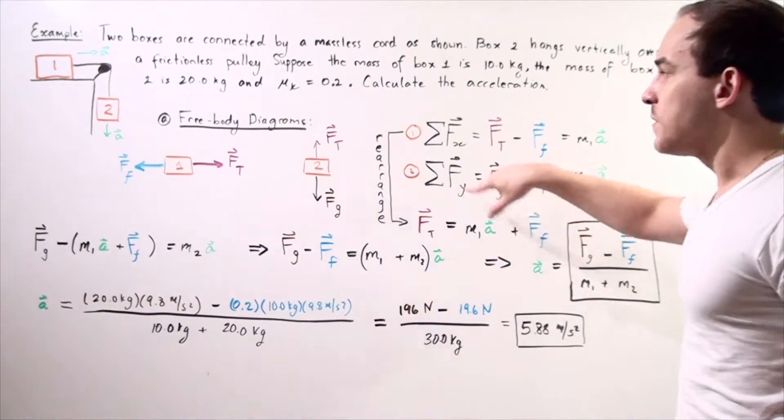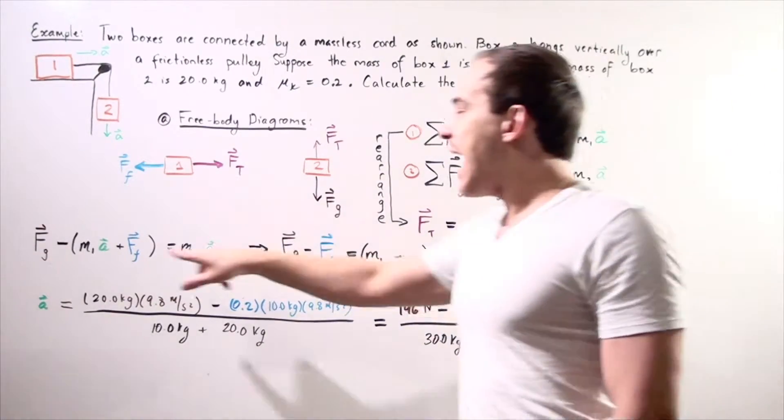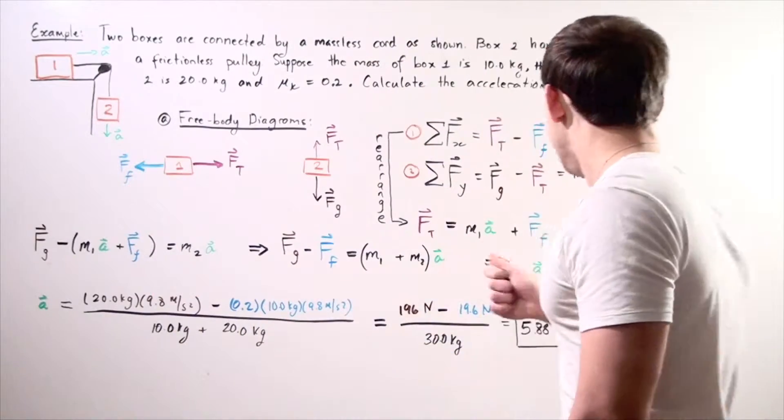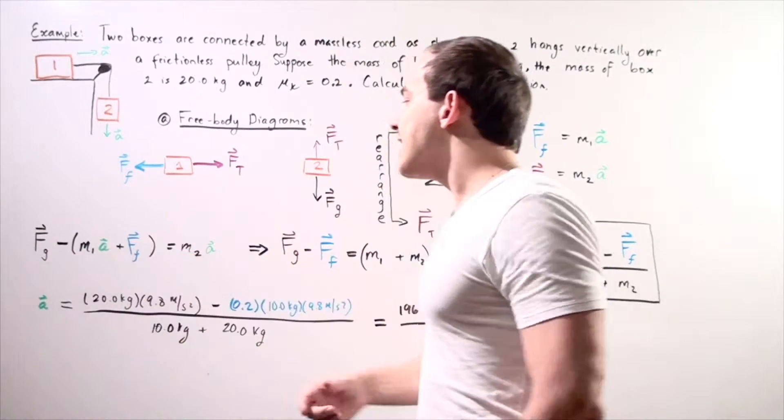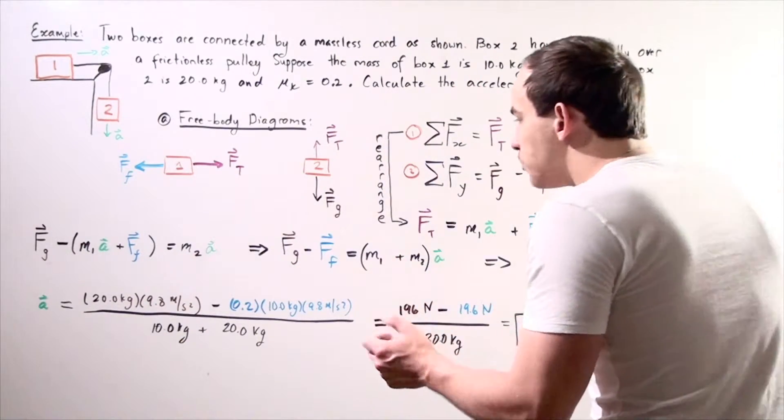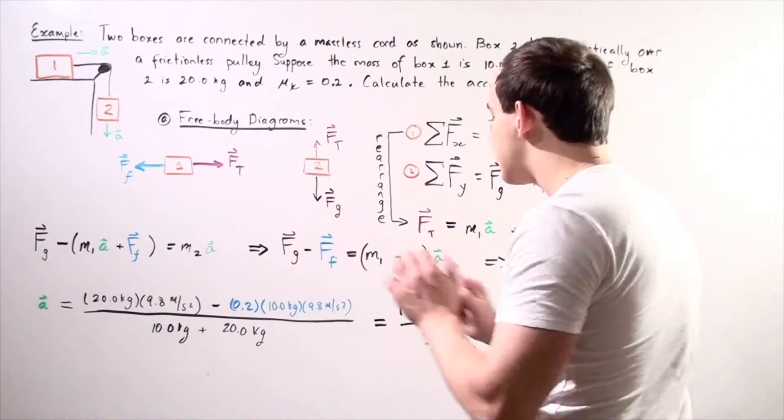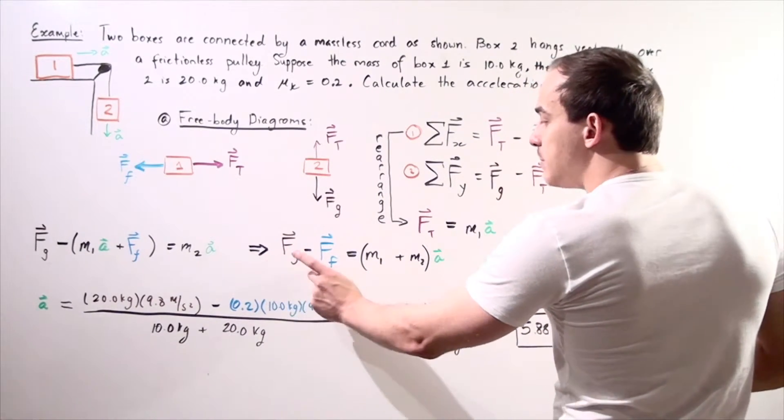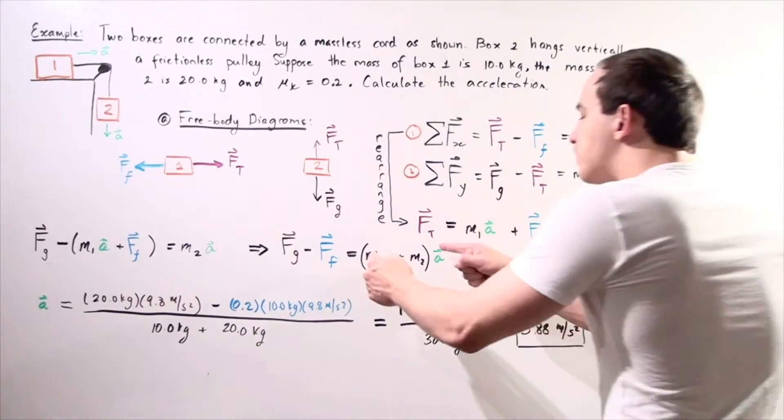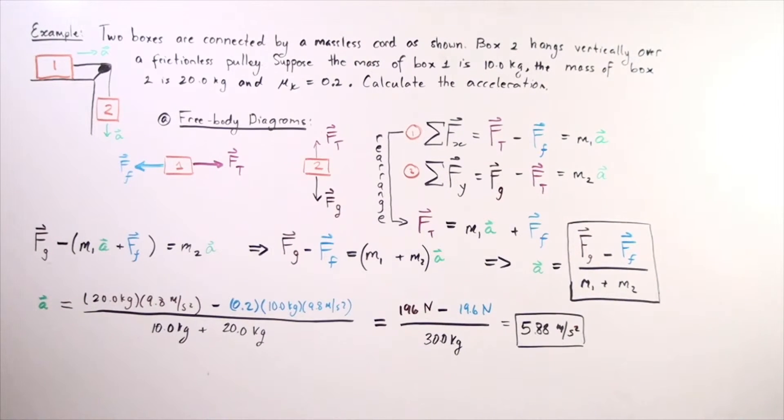The force of gravity that's acting on object two minus this whole equation, M1 times A plus my force of friction equals M2 times A. I distribute my negative and I rearrange my equation. I bring all the variables that have the A to one side, everything else to the other side. I get A multiplied mass one plus mass two equals force of gravity minus the frictional force. I divide both sides by mass one plus mass two and I get that my acceleration is equal to the following formula.